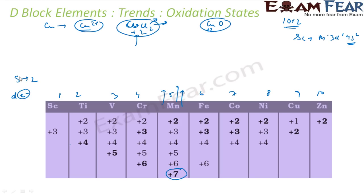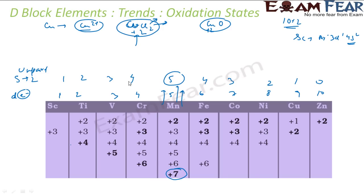If we look at the unpaired electrons: Scandium has 1, then 2, 3, 4, the middle element has 5, then 4, 3, 2, 1, 0. So we see the number of unpaired electrons increases and then decreases. The unpaired electrons determine the number of bonds an element can form, because you typically form bonds with unpaired electrons.